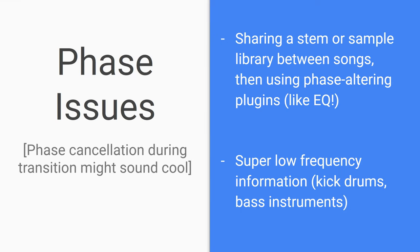Phase issues — it can be a very scary phrase for some of us audio folks, and I think in horizontal resequencing you're at a greater risk for phase cancellation. So if you share a stem or sample library between songs and then use a phase-altering plug-in like an EQ, you could have a problem. For example, if you're doing something similar to Faster Than Light — which has an explorer track and a battle track — and they share a bass line, but in the battle track you've got percussion and you applied an EQ to cut some bass to make room for the kick drum, then during the crossfade the bass completely disappears due to phase cancellation. For what it's worth, that could be super cool — the bass cutting out during the transition between an explore theme and a battle theme could be awesome. So trust your ear and just go with what sounds good.